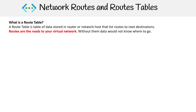Let's take a look at network routes and route tables. A route table is data stored in a router or network host that lists routes to next destinations. The way I like to think of it is that routes are the roads to the virtual network — without them, your data is just not going to go anywhere.